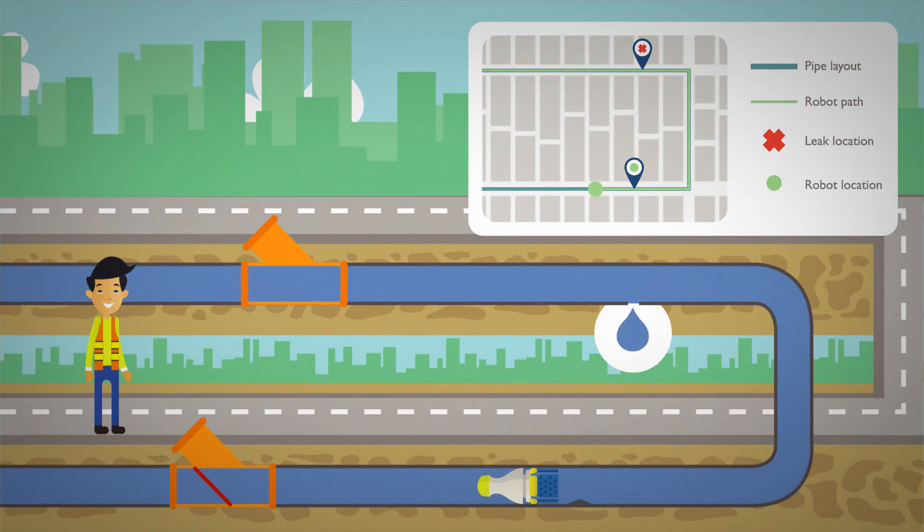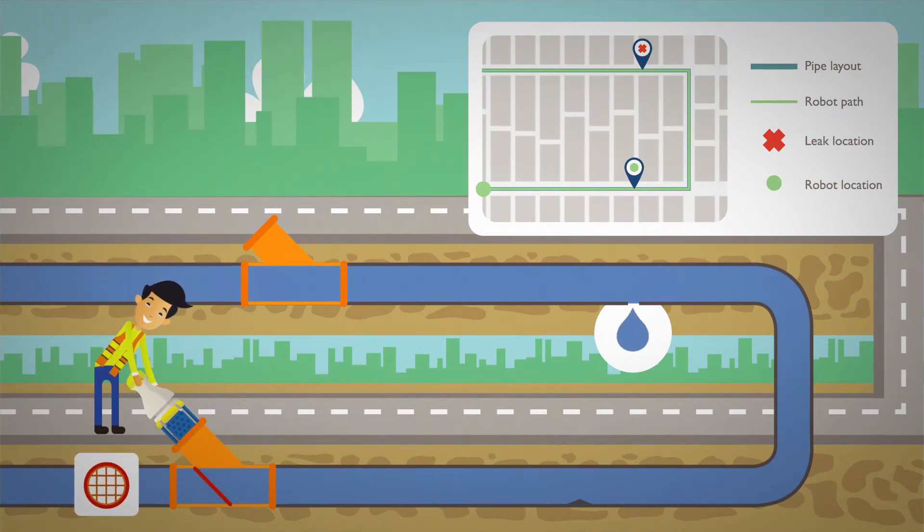When the robot arrives at the exit point, it will be captured by a net. The technician can then take the robot out of the pipe and receive the leak map.